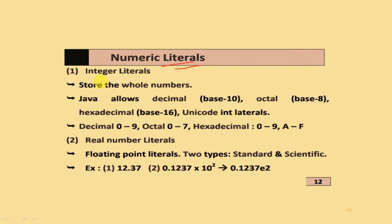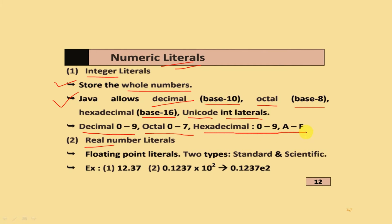In numerical literals, the first type is integer literals and the second is real number literals. Integer literals store whole numbers. Java allows the decimal number system (base 10), the octal number system (base 8), hexadecimal (base 16), and unicode integer literals. Decimal uses digits 0-9, octal 0-7, hexadecimal 0-9 and A-F. For real numbers, there are floating point literals with two types: standard and scientific notation. An example is 5.37.